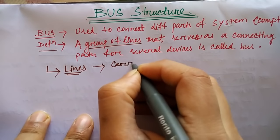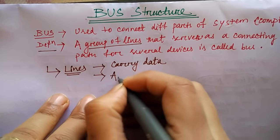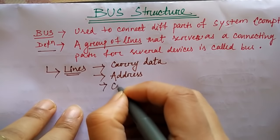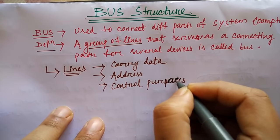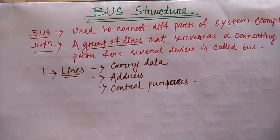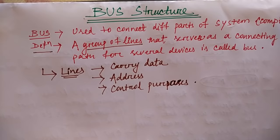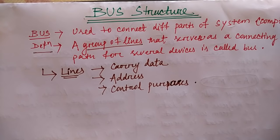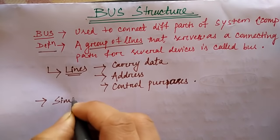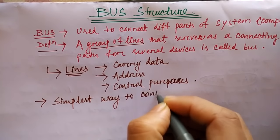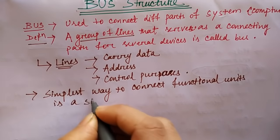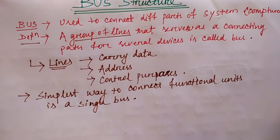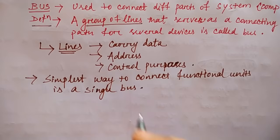So in addition to the lines that carry data, the bus must have lines for address and control. These lines carry data and along with that they carry address, and they are also used for control purposes. The simplest way to interconnect functional units is a single bus, which consists of lines connecting all the systems.